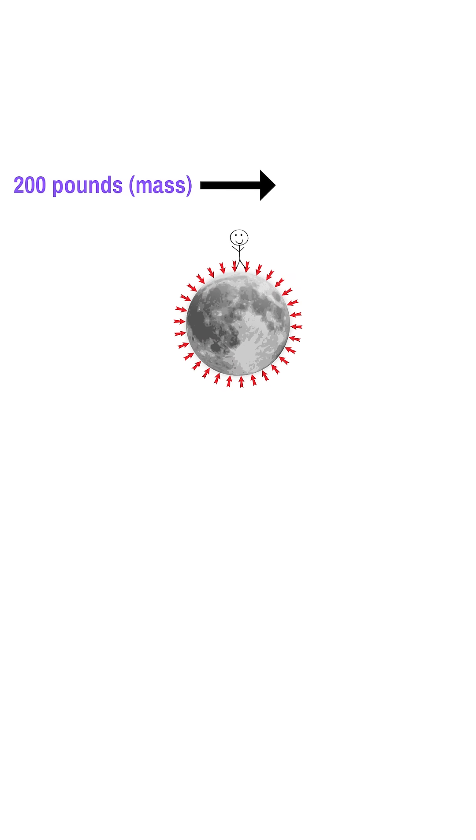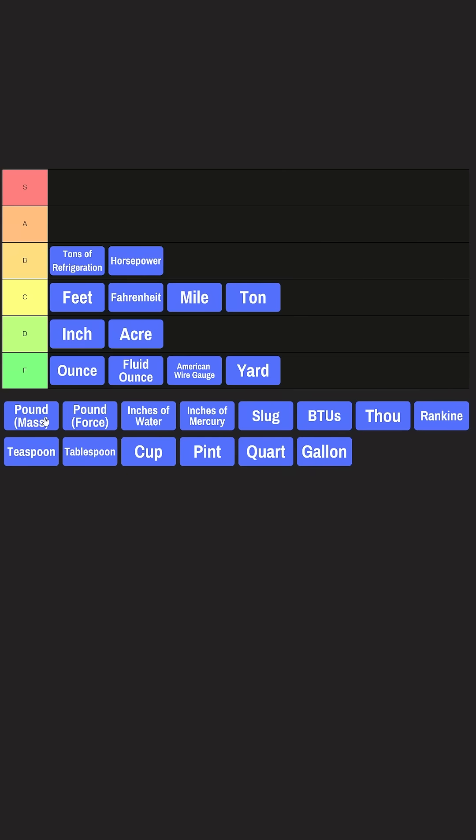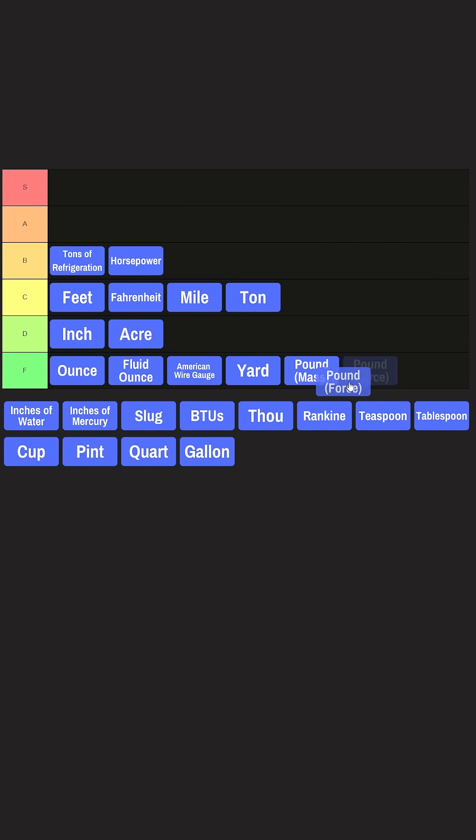However, if you went to the moon, for example, one pound of mass in the weaker gravitational field of the moon would weigh about 0.16 pounds of force, which is an absolute headache. And without a cool origin story that I could find, I'm placing both of these units in F tier.